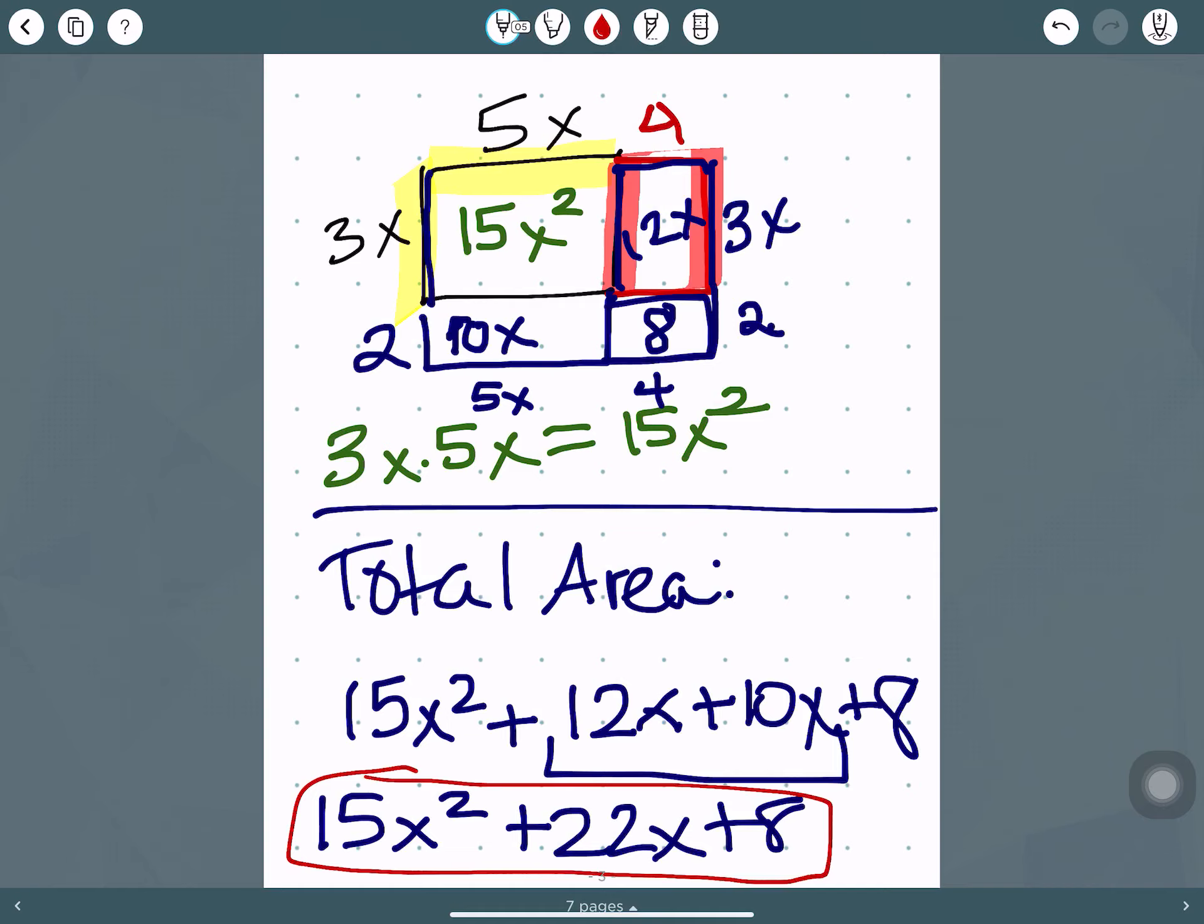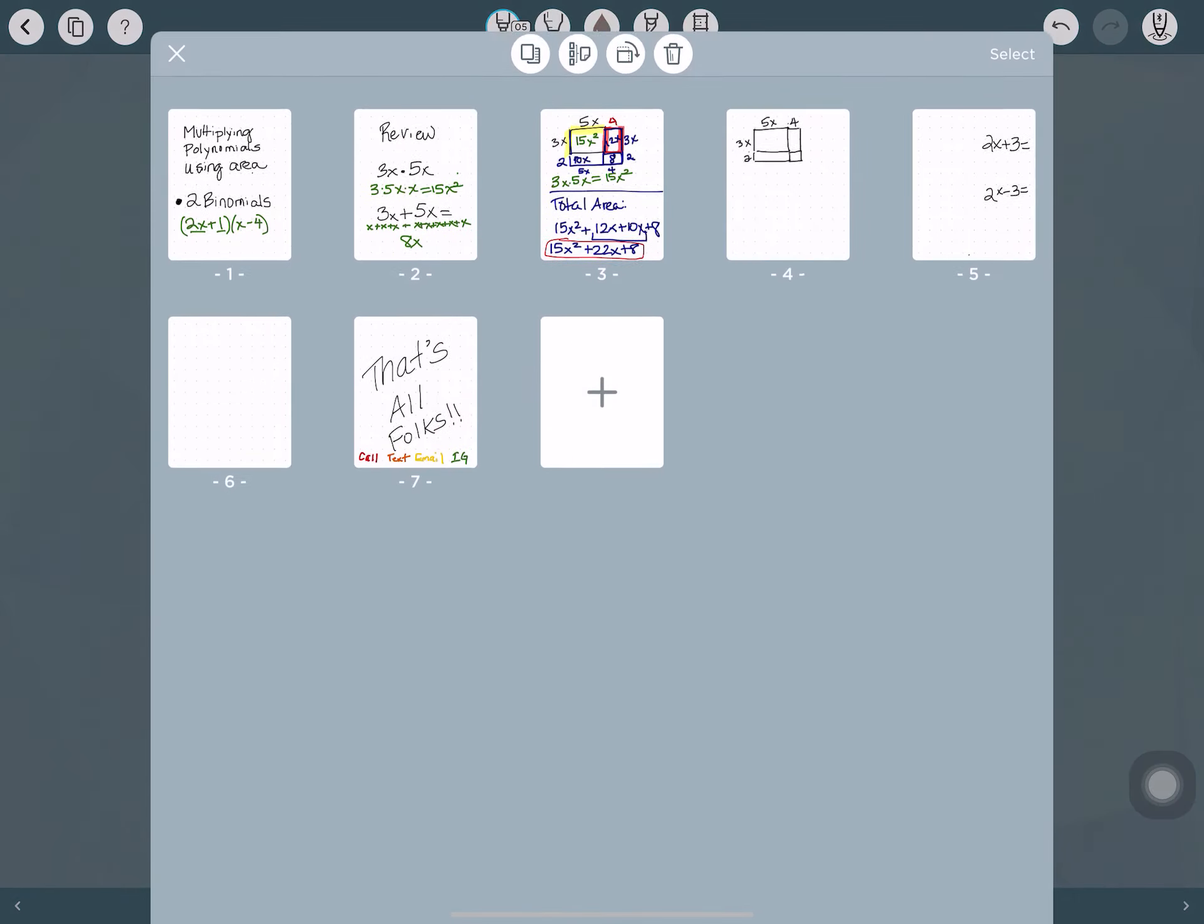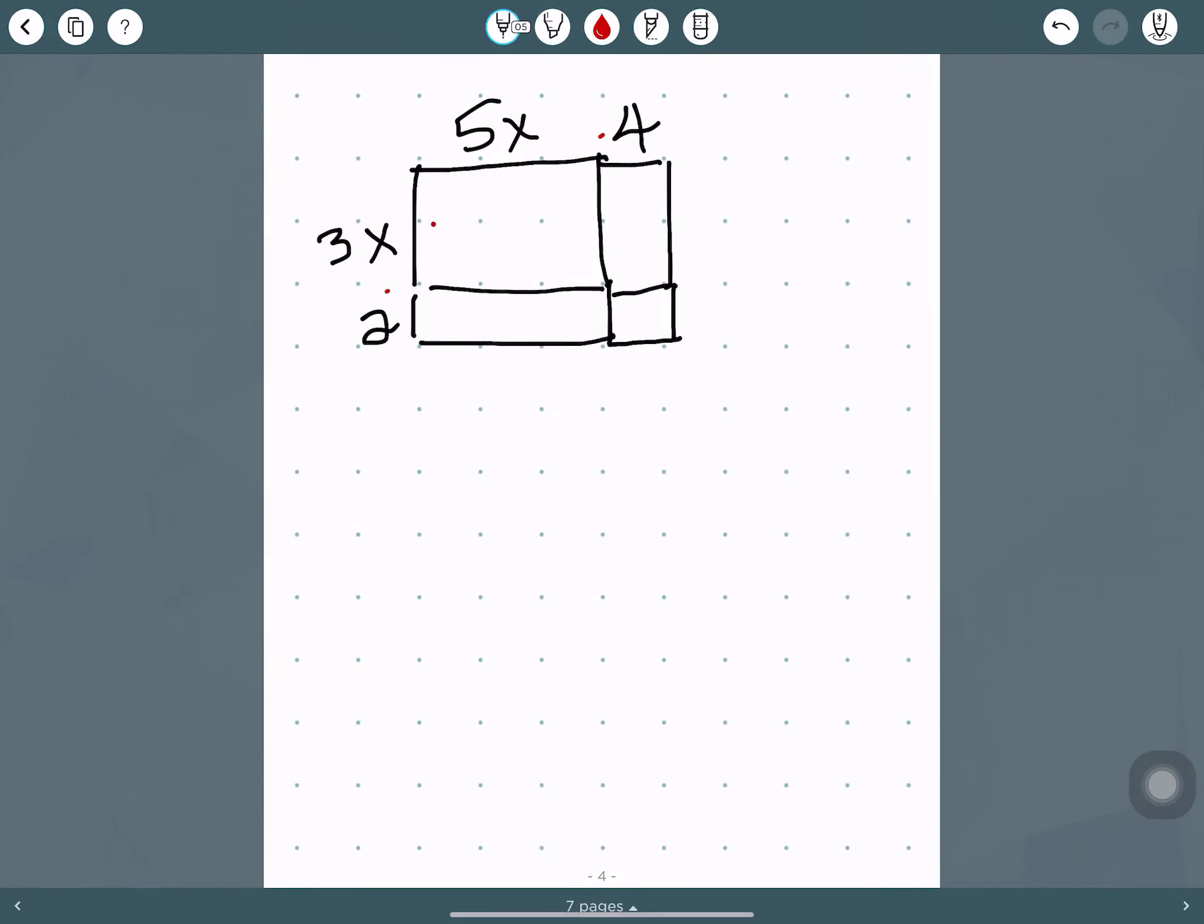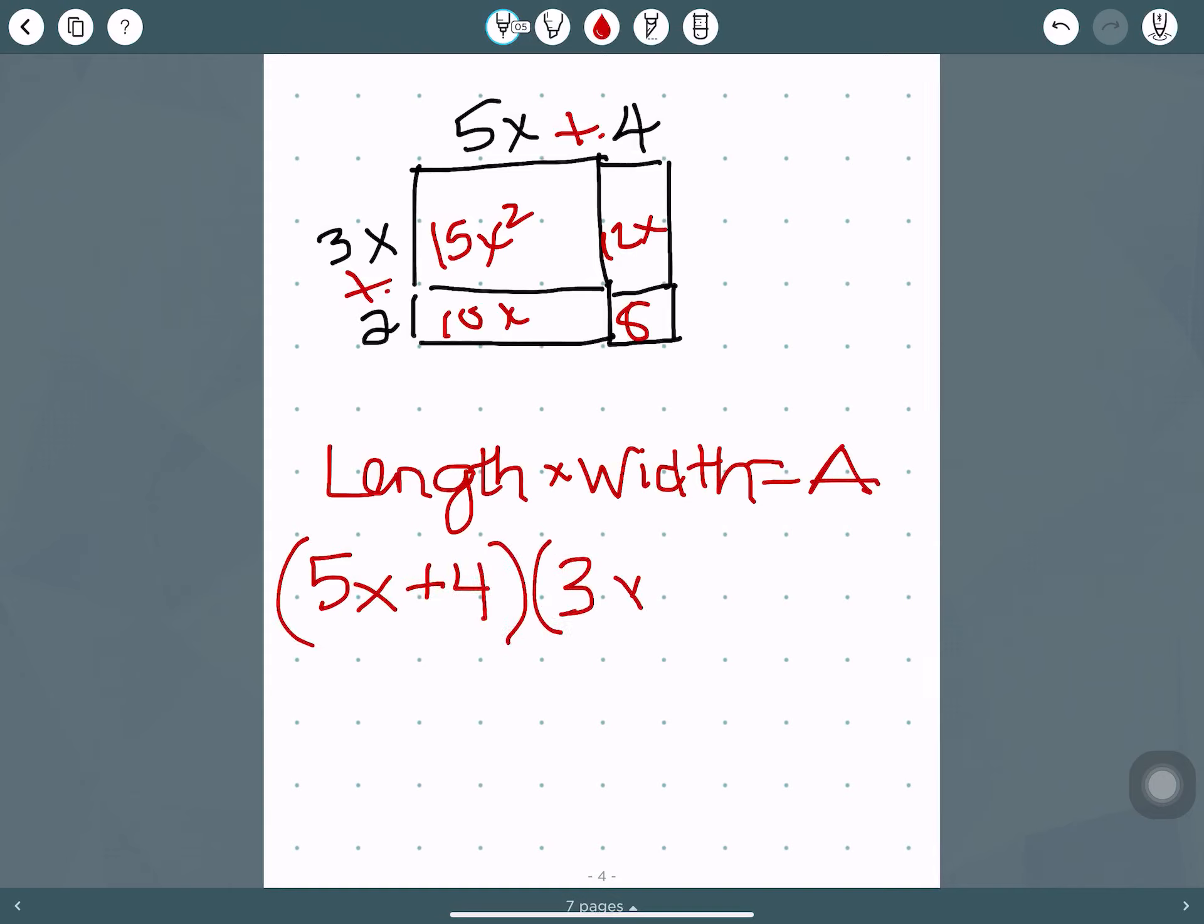Okay, so let's take a look at another aspect of this. So here was our rectangle, 15x squared, 12x, 10x, and that is 8. Okay, so essentially we added 4 on to the length, and we added 2 on to the width. So the length times the width equals our area. So the length is 5x plus 4, and the width is 3x plus 2. And then we said that gave us, 15x squared plus 22x plus 8.